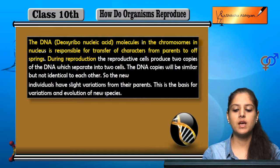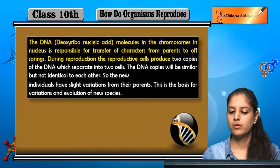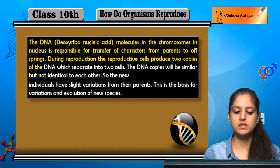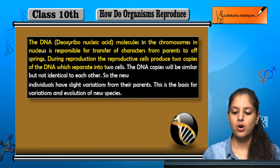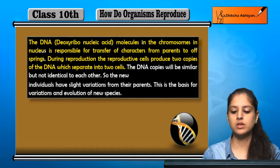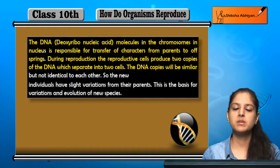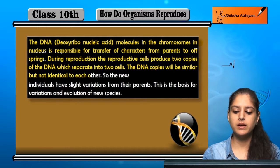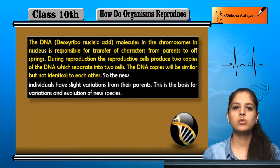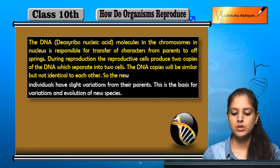Reproduction ke time par, jo reproductive cells hain, woh dho copies banate hain is DNA ki. Aur yeh dho copies dho cells mein separate ho jate hain. Yeh dho copies they will be similar, but not identical to each other. Yeh similar hongi, lekin bilkul identical nahi hoti hain.